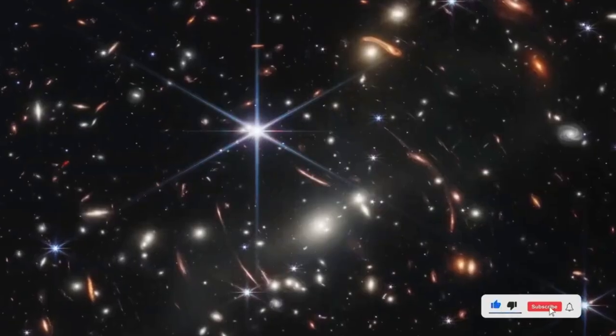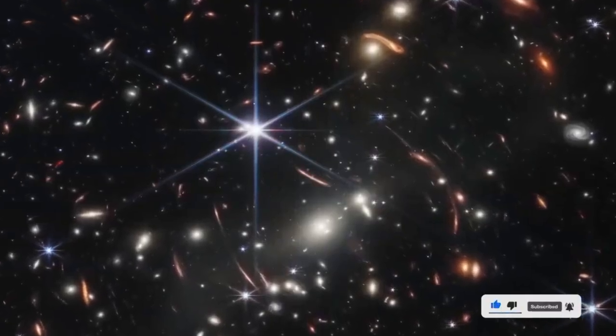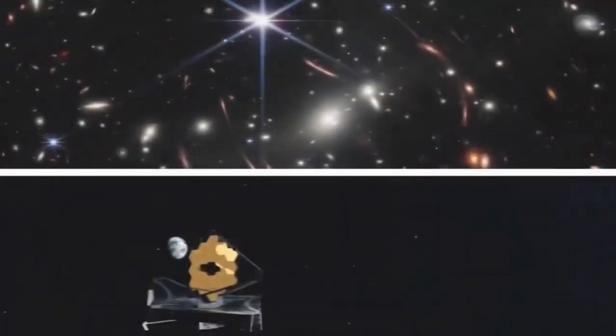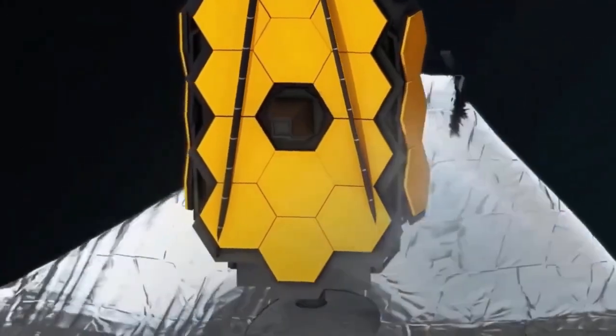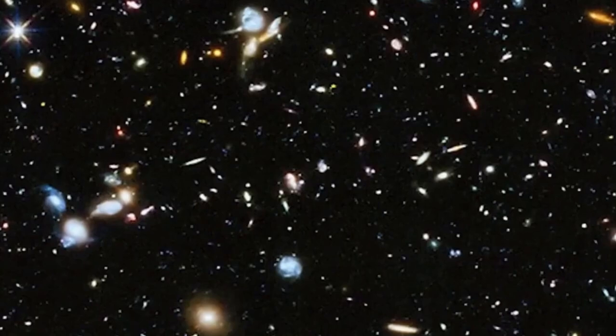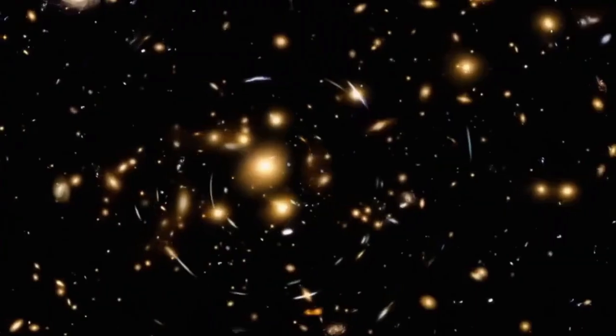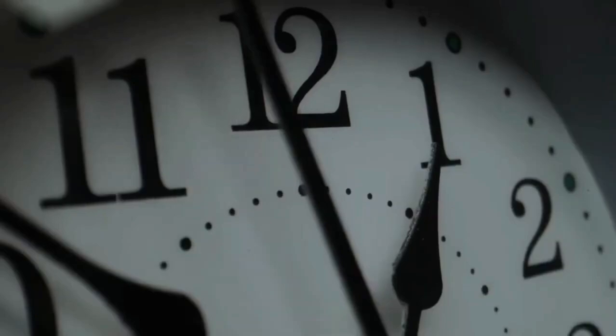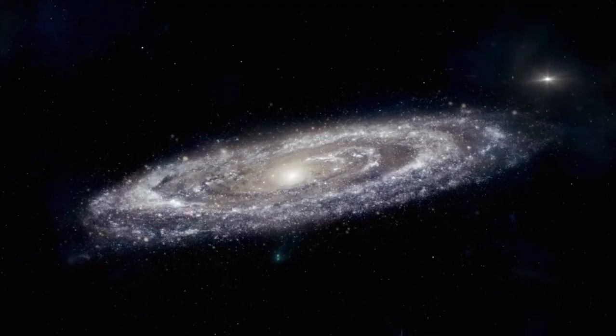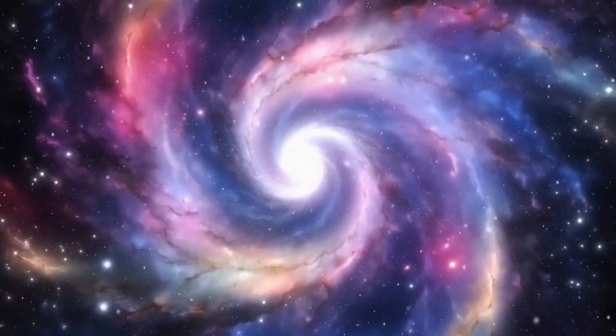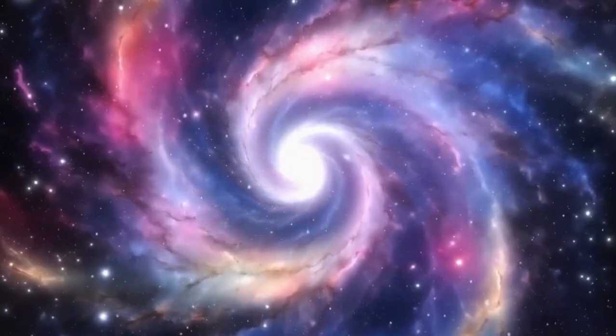According to the Big Bang theory, the galaxies farthest away in the JWST images represent a cosmic snapshot from around 400 to 500 million years after the universe's birth. However, some of these galaxies appear to house stars that are over a billion years old. Now, if you've been following the Big Bang theory, you know that's a big problem because nothing should be older than the Big Bang itself.